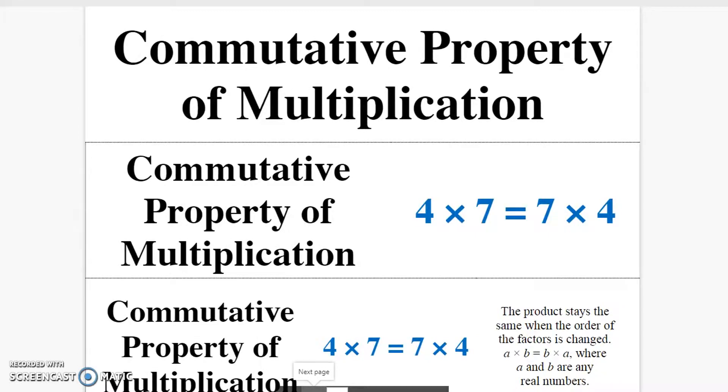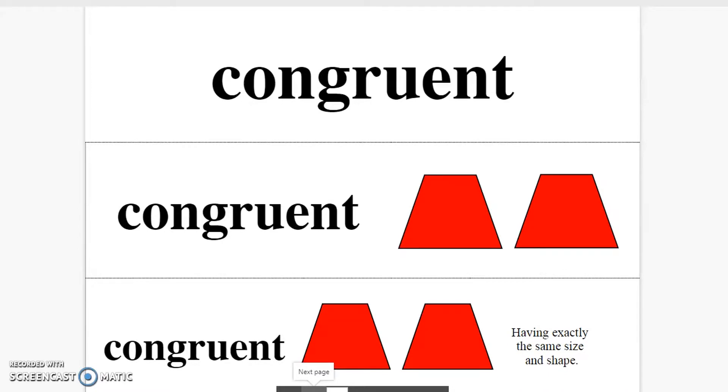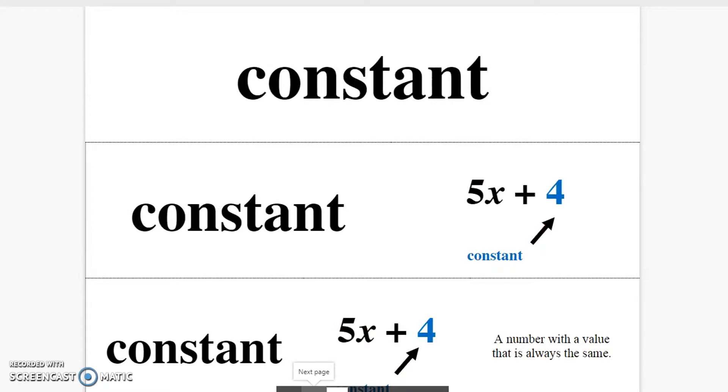Commutative property of multiplication. The product stays the same when the order of the factors is changed. Congruent. Having exactly the same size and shape. Constant. A number with a value that is always the same.